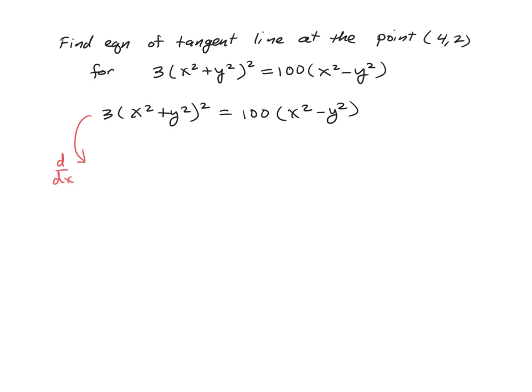So in doing so, our multiply constant 3 is going to copy along, and then we have to make sure we follow the chain rule. So that's going to be 2 times our (x² + y²) now to the first power. And now we have to multiply by the derivative of the inside, which is going to be 2x plus 2y times y prime.